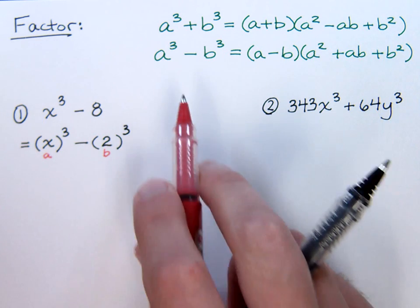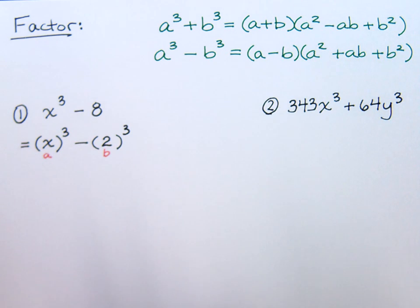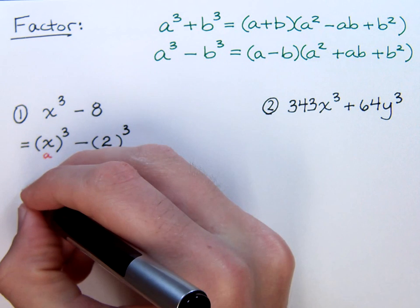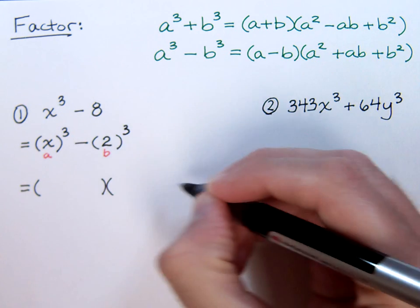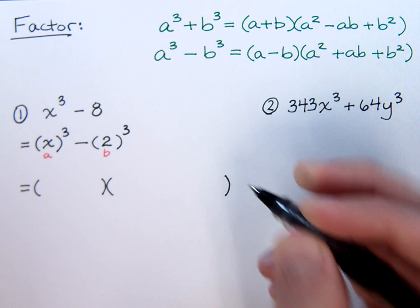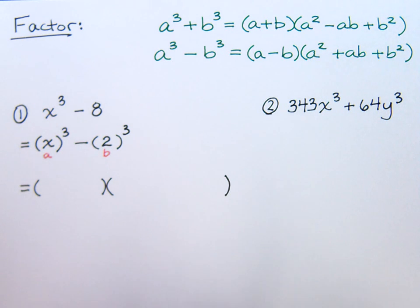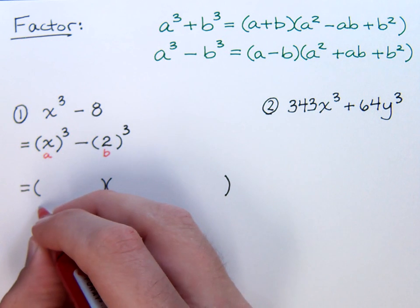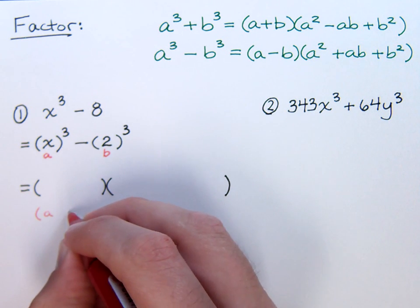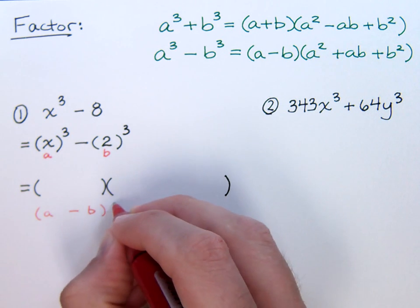In this case, it's this one right here for the difference of cubes. So when I factor this, I expect to have two factors. Now, since we know that we're using this formula right here, it's a good idea to have this memorized and then sketch it below your actual factorization.